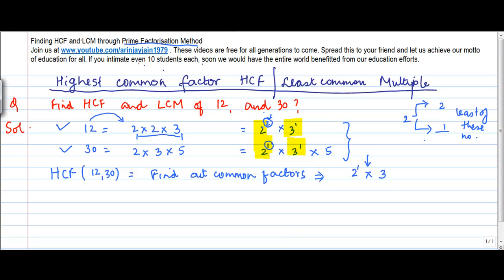For 3, both numbers have a power of 1, so the least is also 1. Therefore, the highest common factor becomes 2¹ × 3, which equals 6.